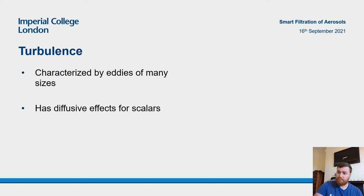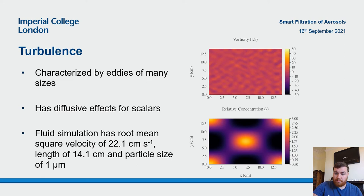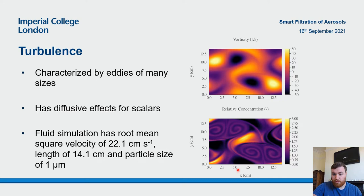Turbulence is a fluid phenomenon that occurs at high Reynolds numbers and is characterized by chaotic motion of vortices or eddies at many different length scales. This has the effect of accelerating diffusion of passive scalars in the flow. In this simulation, we start off with a very high concentration in the middle and at the corners, and you can see it being diffused around.